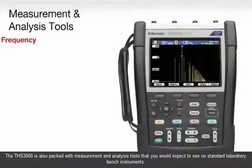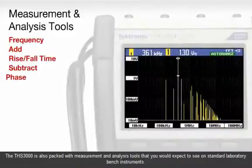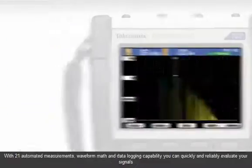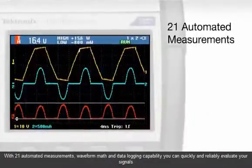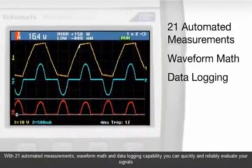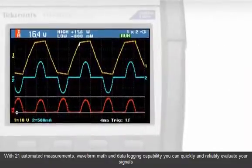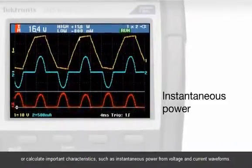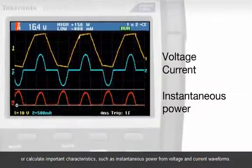The THS3000 is also packed with measurement and analysis tools that you would expect to see on standard laboratory bench instruments. With 21 automated measurements, waveform math, and data logging capability, you can quickly and reliably evaluate your signals or calculate important characteristics, such as instantaneous power from voltage and current waveforms.